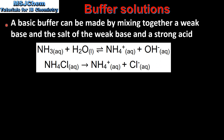Next we look at a basic buffer solution. A basic buffer can be made by mixing together a weak base and the salt of the weak base and a strong acid. Here we have the weak base which is ammonia, and it reacts with water to form the ammonium ion and the hydroxide ion. Because this is a weak base, the equilibrium lies to the left. Ammonium chloride is the salt produced from a weak base and a strong acid. This fully dissociates to form ammonium ions and chloride ions. So the buffer solution contains a high concentration of ammonia and a high concentration of ammonium ions.